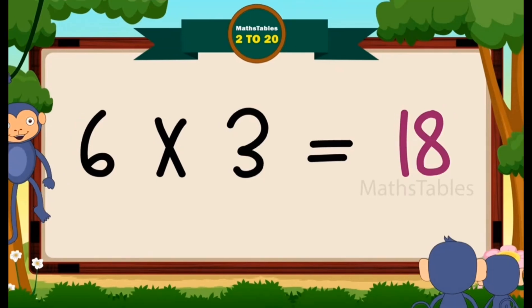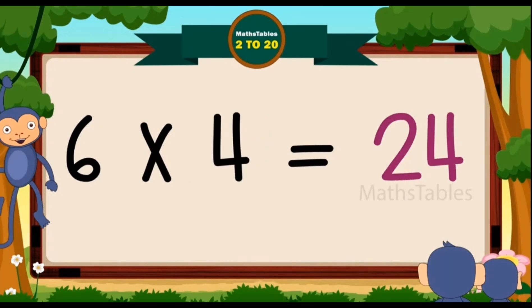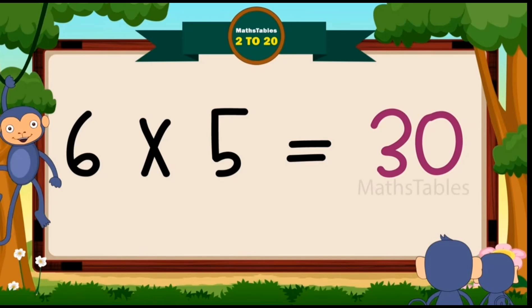Six threes are eighteen. Six fours are twenty-four. Six fives are thirty.